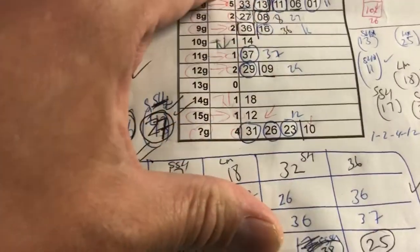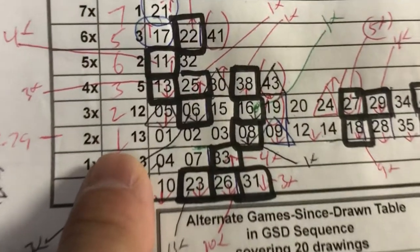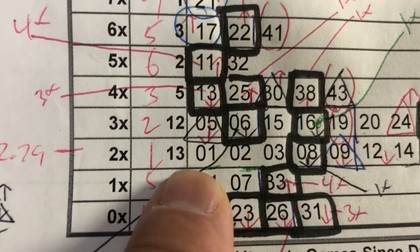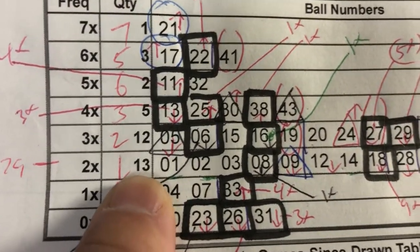Yep, number 12 sounds good. And in fact, for this third tier, 2x, it has 13 numbers.